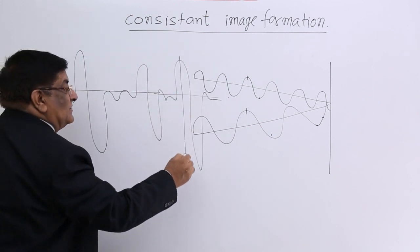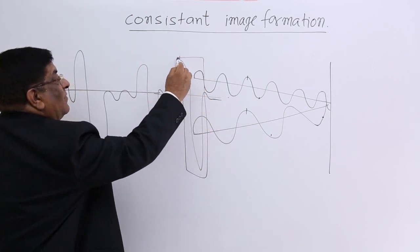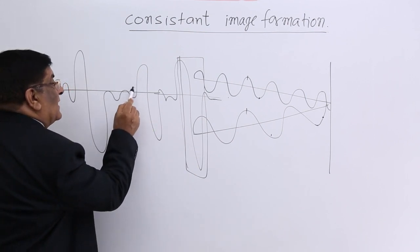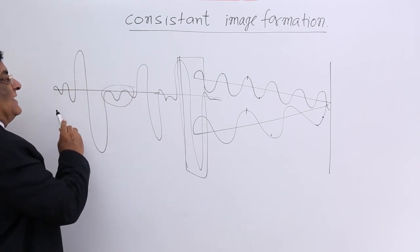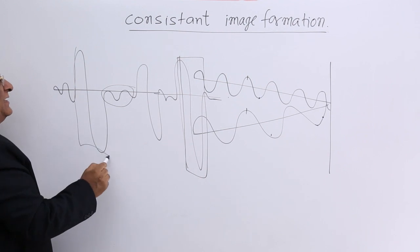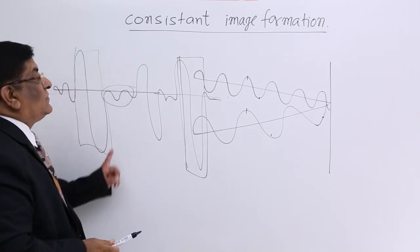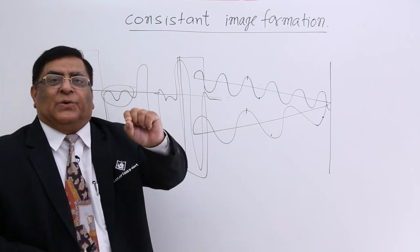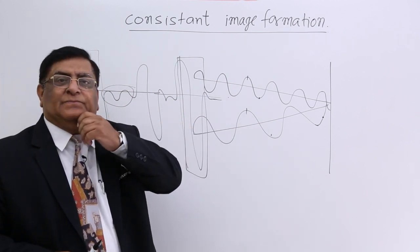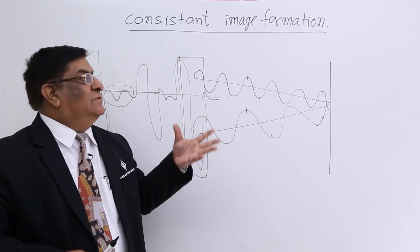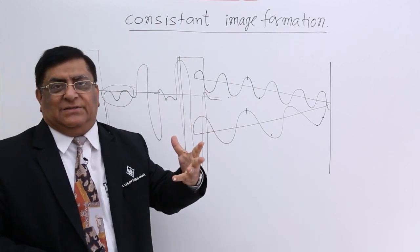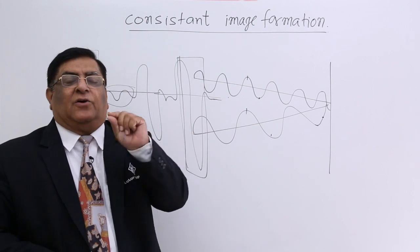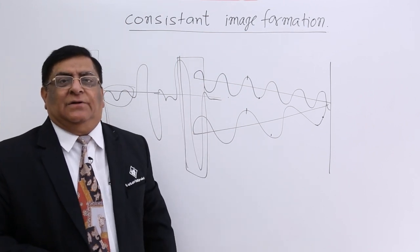When the high-amplitude part reaches, there will be a lot of brightness on the screen. When the zero-amplitude part reaches, there will be darkness. When the next part reaches, again there will be brightness. So sometimes the screen will be bright and sometimes the screen will be dark. We will not be able to see it with our eyes because these changes are so swift that we are not able to differentiate.